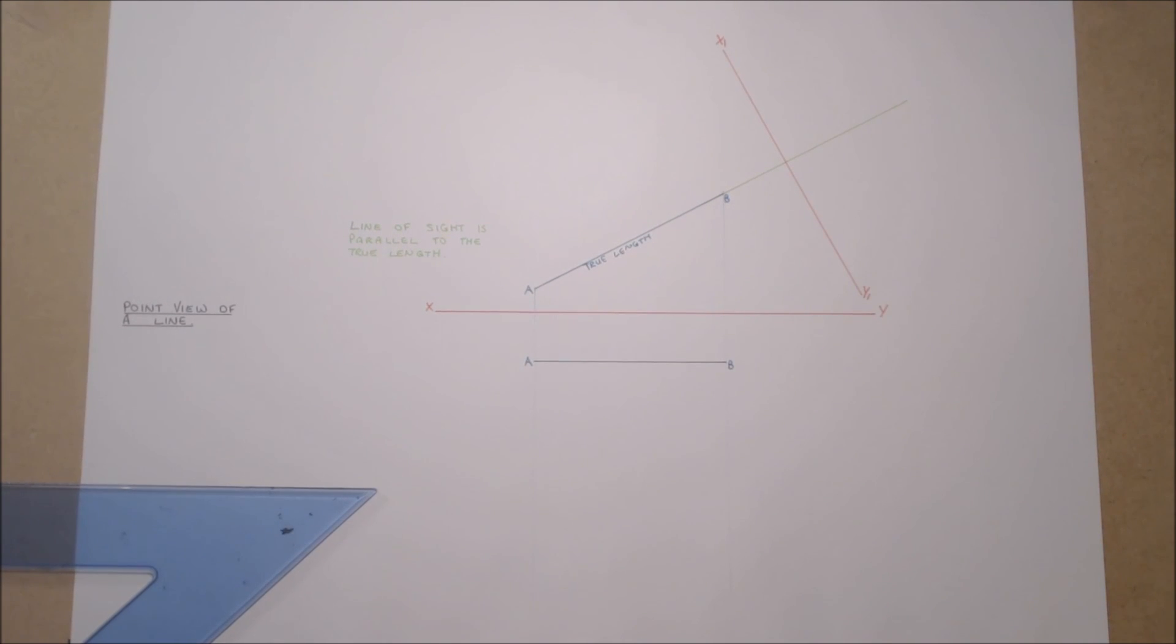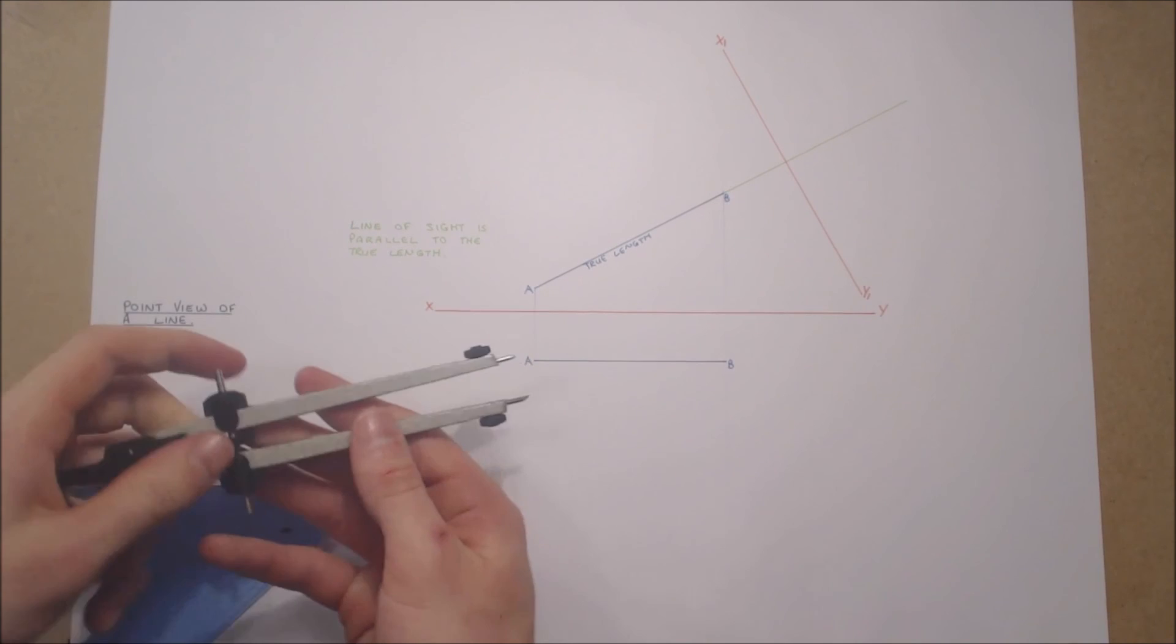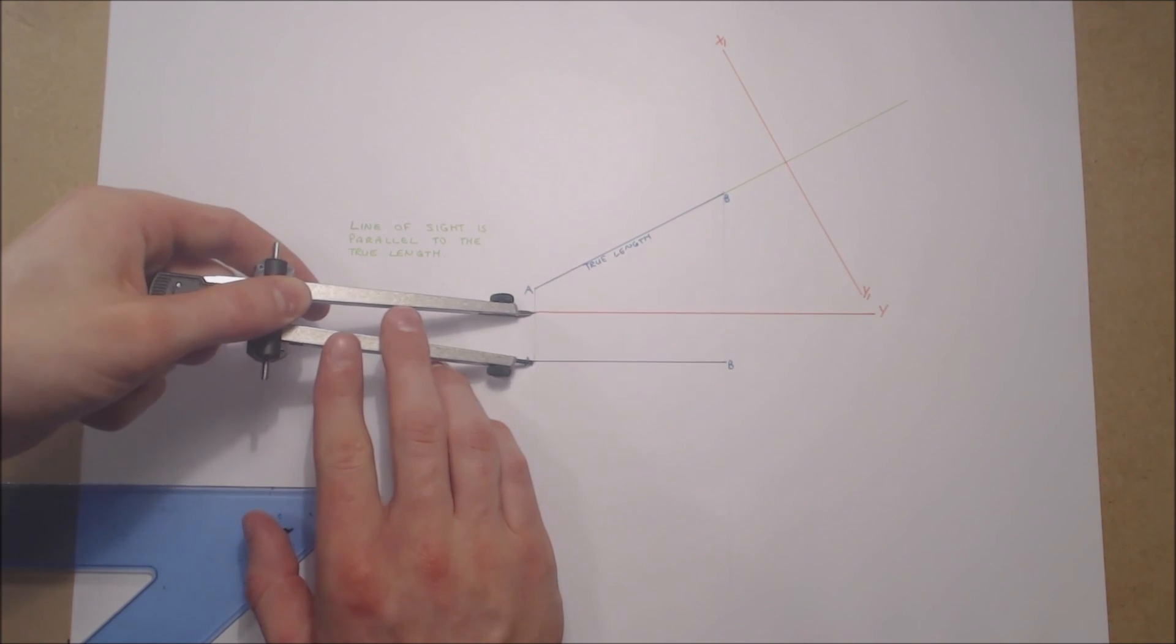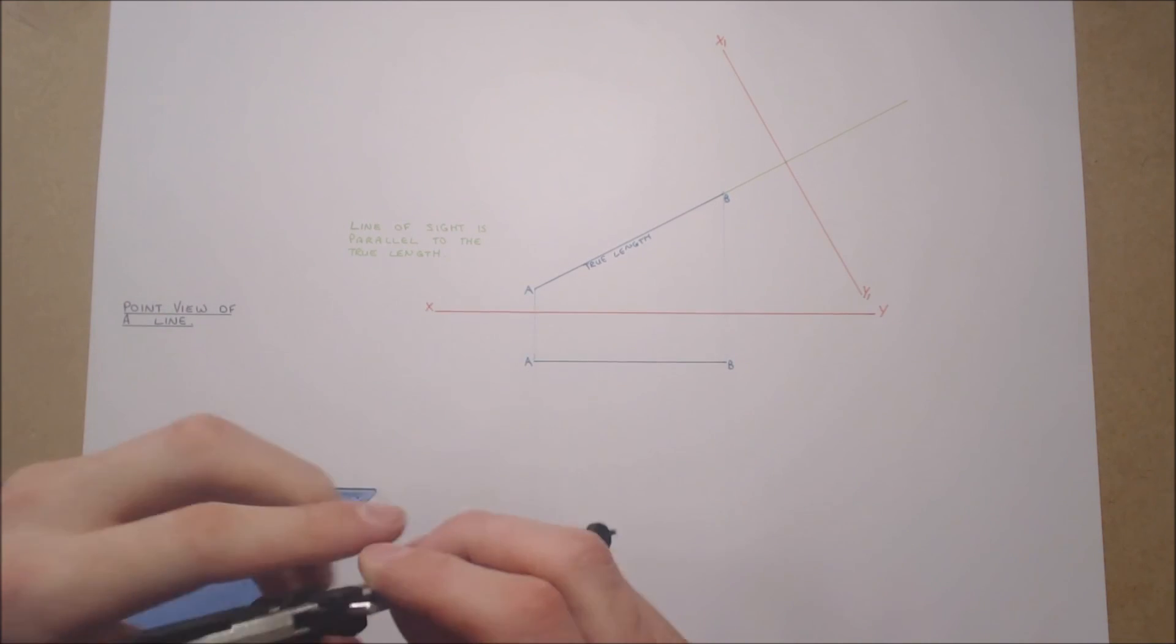As we are projecting an auxiliary plan from the elevation of line AB, our distances are taken from our plan and transferred into our auxiliary plan.